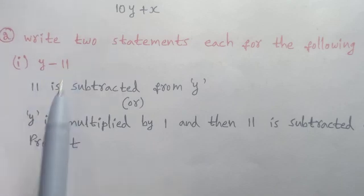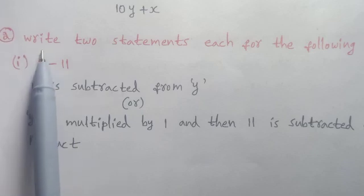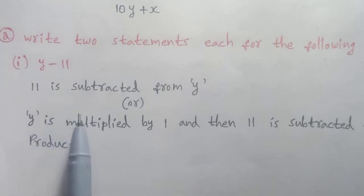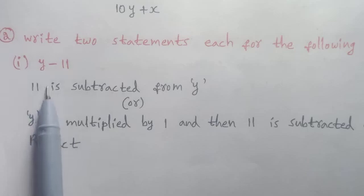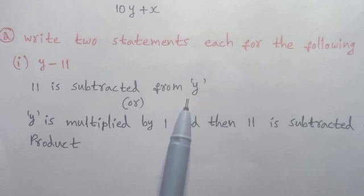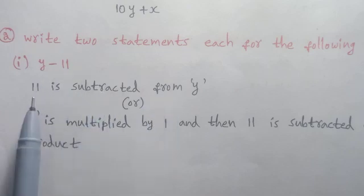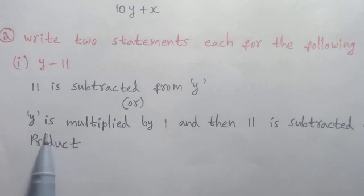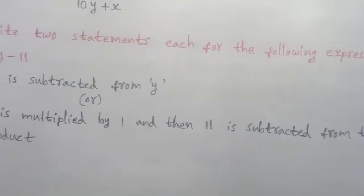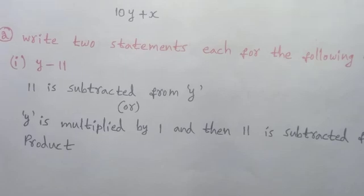For each expression we need to write two statements. First expression: y minus 11. Statement one: 11 is subtracted from y. Statement two: y is multiplied by 1 and then 11 is subtracted from the product, giving 1 into y minus 11. We can write it in different ways.